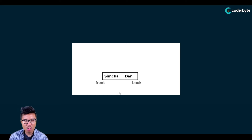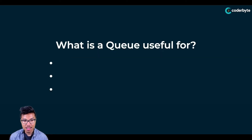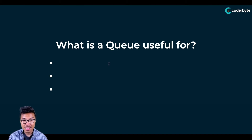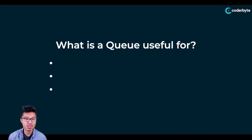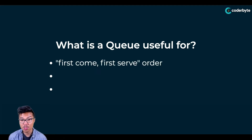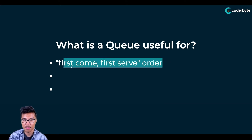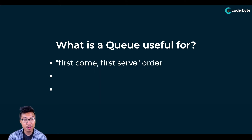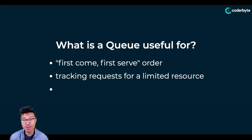Something to know about queues is they can either have a max length or not — it's really up to you depending on your use case. So what is a queue actually useful for? In general, a queue is useful when you need a first-come first-serve pattern. Queues are especially useful when you want to track requests for a limited resource.